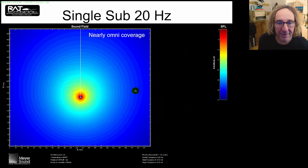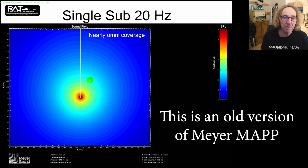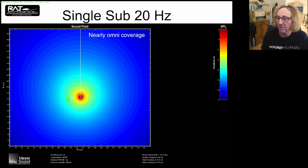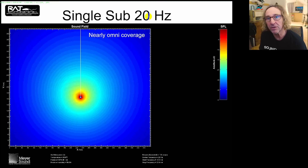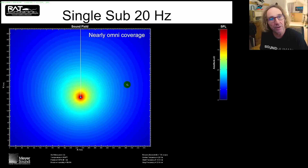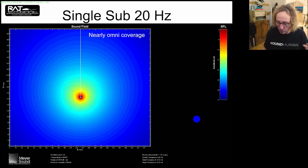Let's look at that exact same setup in Meyer Map, which gives us more frequency response linearity — it'll look the same at all frequencies, and it allows me to check much higher frequencies as well. I've taken these screenshots and laid them exactly on top of each other so we can develop a sense of motion and get a feel for what the coverage is doing as I raise frequency. Here's 20 Hz.